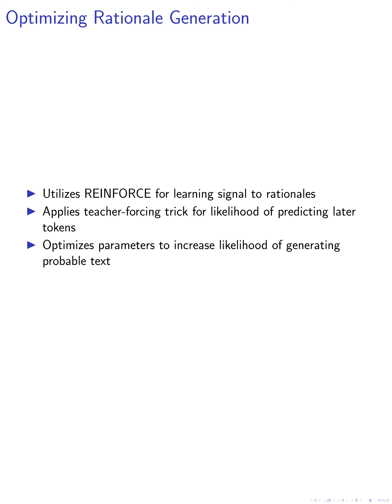The rationale generation parameters, such as start and end tokens and language model weights, are optimized to increase the likelihood of generating rationales that make future text more probable. By including in the loss function the likelihood of predicting not only the token after the thought but also later tokens, we aim to reduce variance in training and improve the overall quality of generated text.